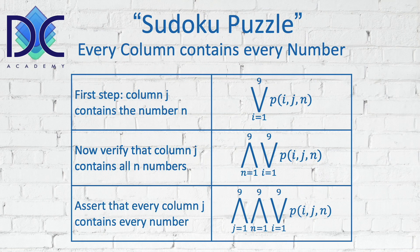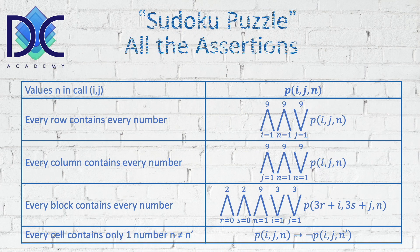This is one of the first elements we establish — checking every column to ensure it contains every number. We also have to do this for the rows. The assertion that every row contains every number is: ∧ from i=1 to 9 of ∧ from n=1 to 9 of ∨ from j=1 to 9 of P(i, j, n). This verifies that every row contains every number.